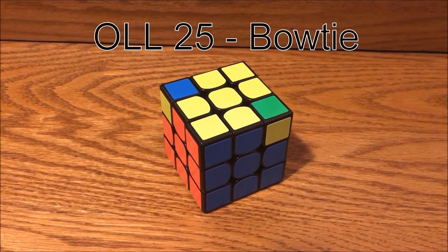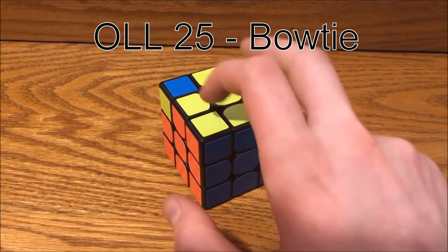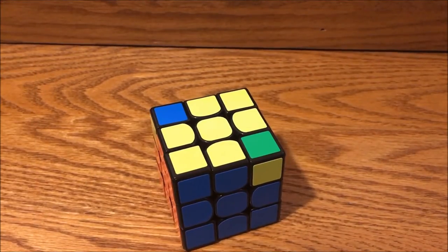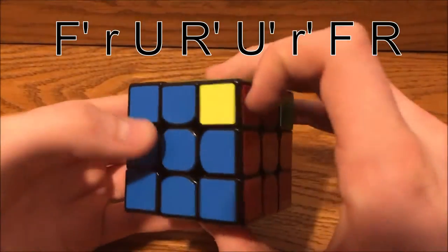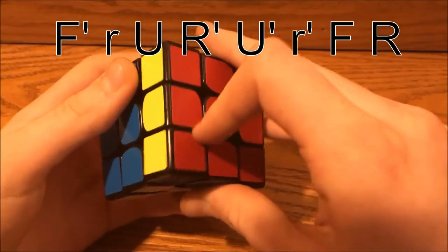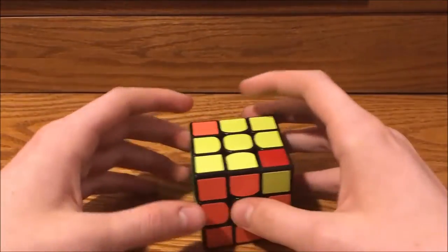The next case is this bow tie case, where the two corners that are up are diagonal from each other. To solve it, hold the cube like this and do this algorithm. Here it is fast.